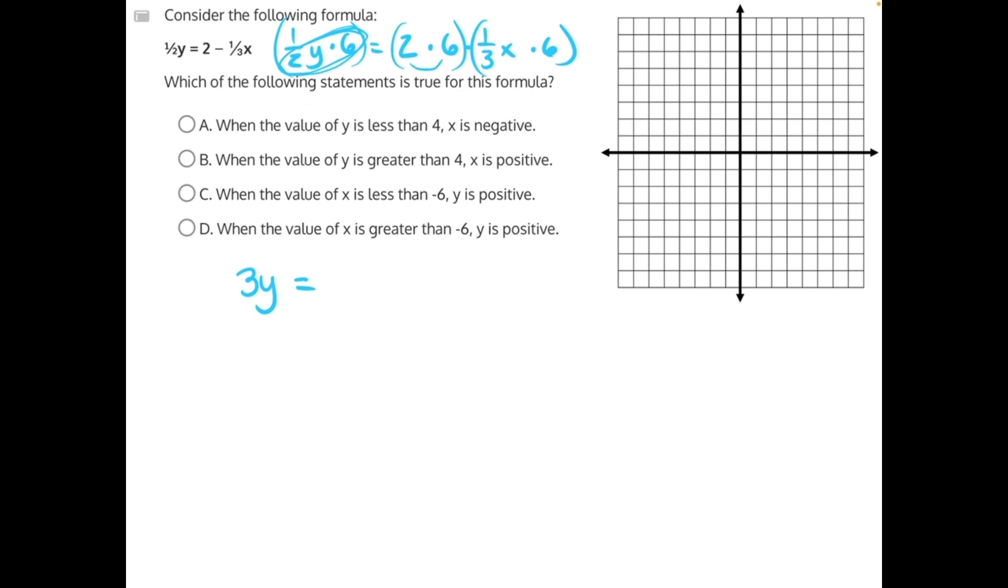Then we'll have 2 times 6, which will give us 12 minus. Here, we'll have to pull out the greatest common factor of 3, which will cancel this out and leave us with 6 divided by 3, which is 2. So we'll have 2x. And now we can find our intercepts.